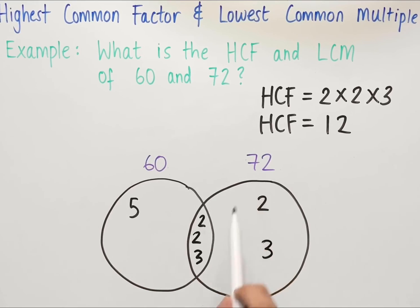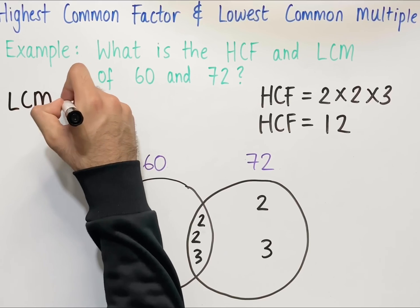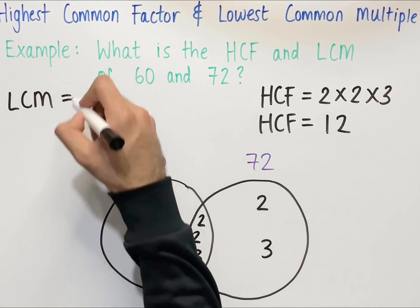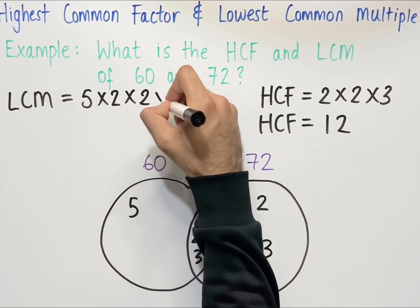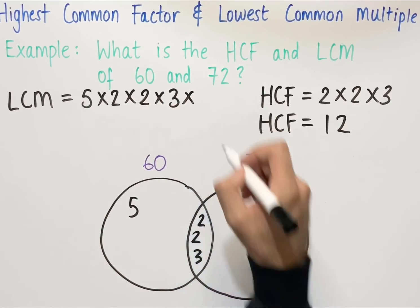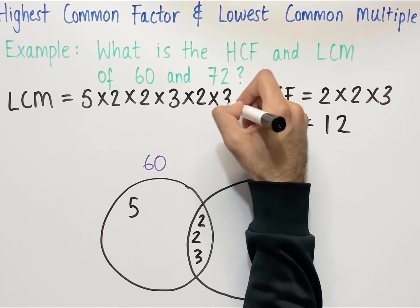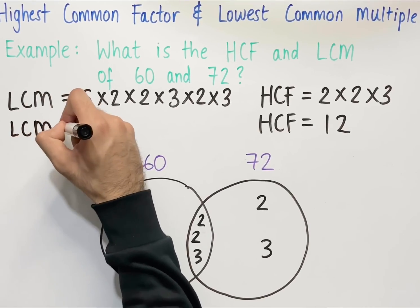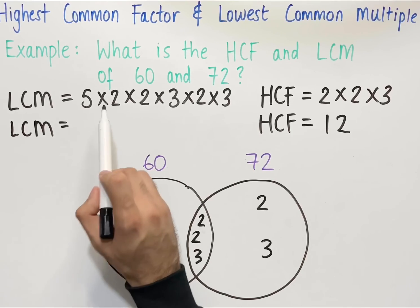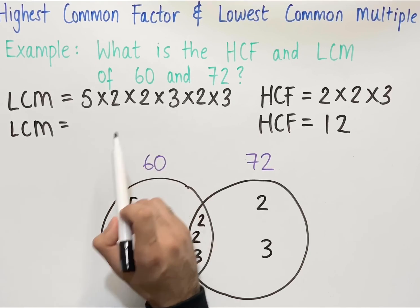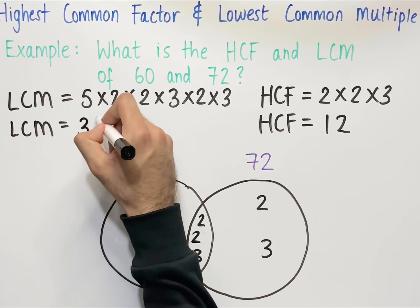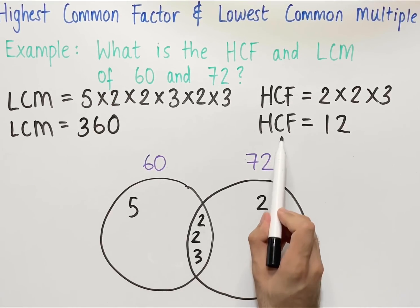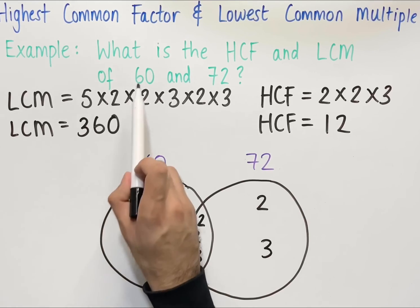To work out the lowest common multiple of 60 and 72, we multiply all of the numbers within the entire Venn diagram. So the LCM equals 5 times 2 times 2 times 3 times 2 times 3. Calculating: 5 times 2 is 10, times 2 is 20, times 3 is 60, times 2 is 120, and 120 times 3 is 360. So the lowest common multiple of 60 and 72 is 360.